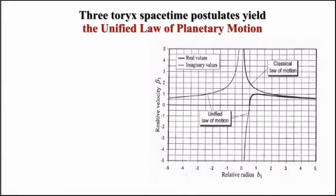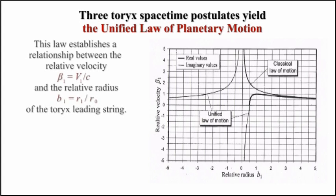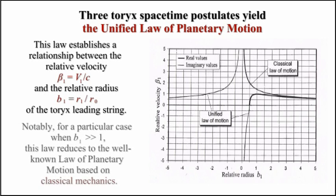Toreses' spacetime postulates yield the unified law of planetary motion. This law establishes a relationship between the relative velocity β1 and the relative radius b1 of the Torek's leading string. Notably, for a particular case when b1 is much greater than 1, this law reduces to the well-known law of planetary motion based on classical mechanics.